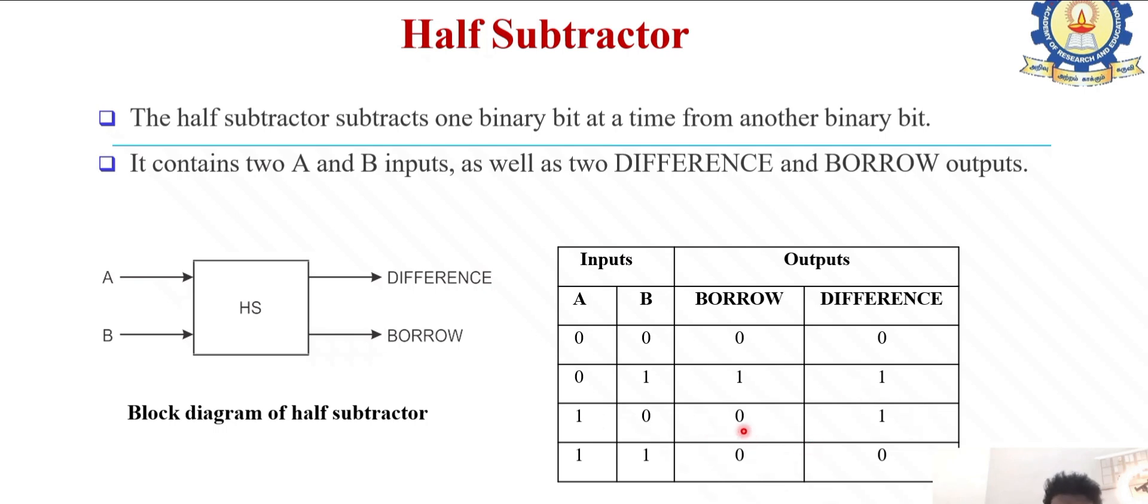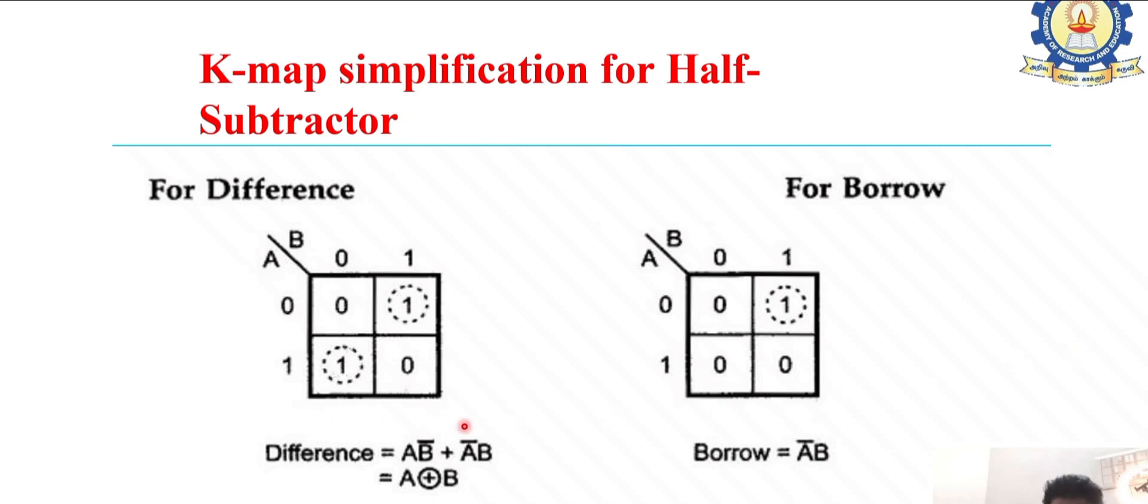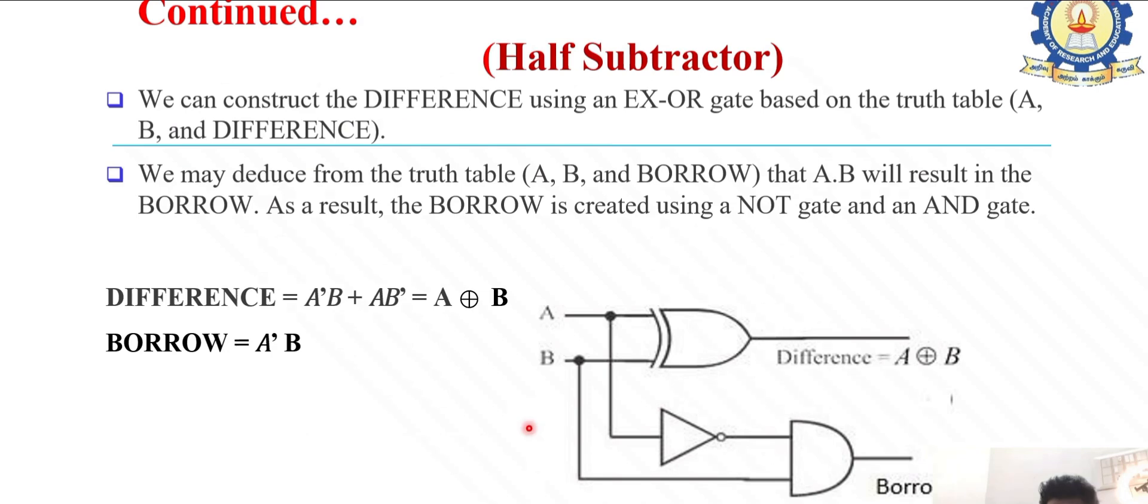Plotting the K-map, difference equals A B bar plus A bar B, and borrow equals A bar B. We draw the logic diagram for a half subtractor. A exclusive-OR B uses an XOR gate, and A bar B uses a NOT gate at point A and an AND gate with B.